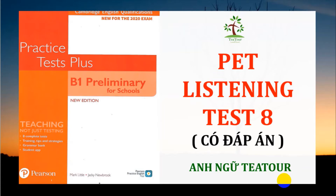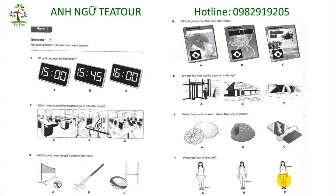Test 8. Listening. Part 1. There are four parts to the test. You will hear each part twice. For each part of the test, there will be time for you to look through the questions and time for you to check your answers. Write your answers on the question paper. You will have six minutes at the end of the test to copy your answers onto the answer sheet. The recording will now be stopped. Please ask any questions now, because you must not speak during the test.